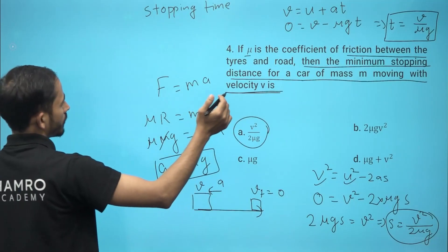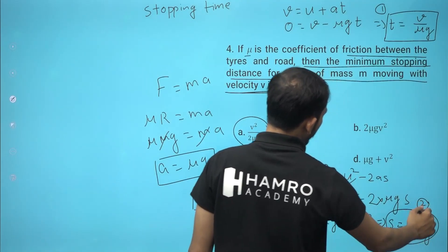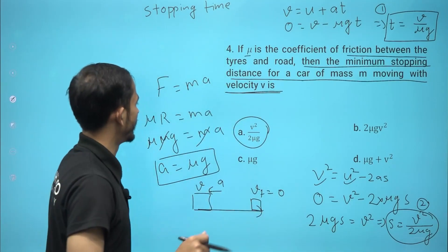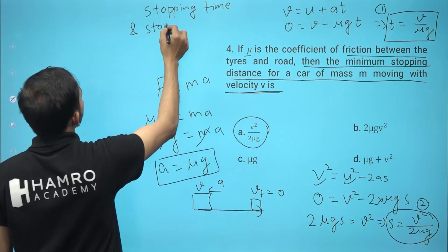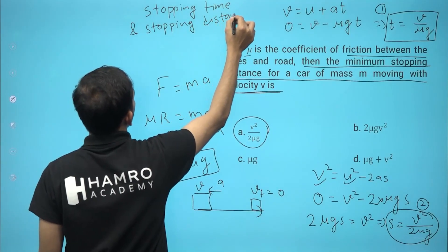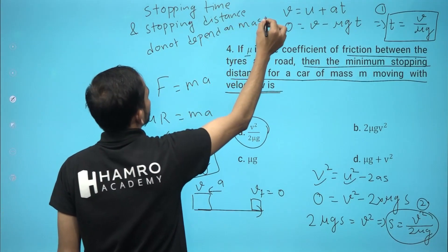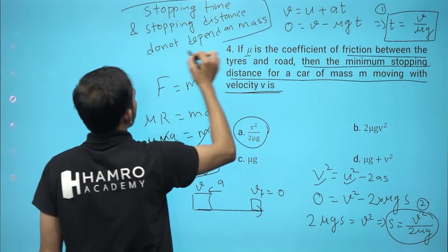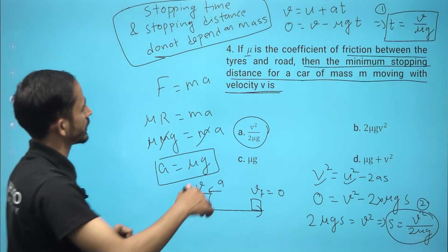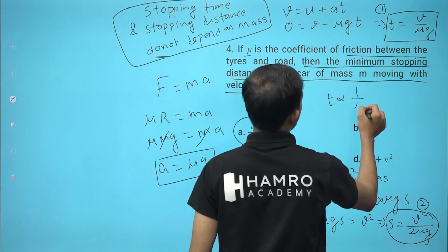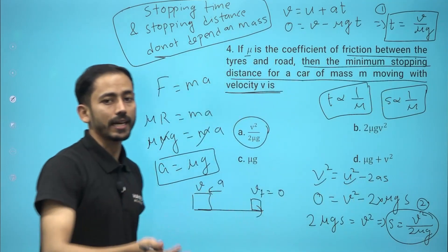For stopping distance, s equals v squared divided by 2 mu g. Importantly, stopping time t is inversely proportional to mu, and stopping distance s is also inversely proportional to mu. Both stopping time and stopping distance do not depend on the mass of the car — mass cancels out in the derivation.